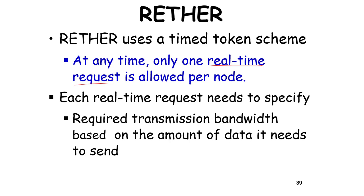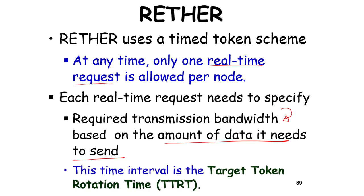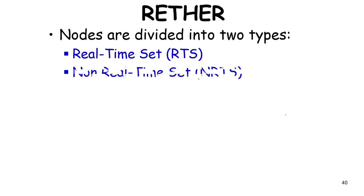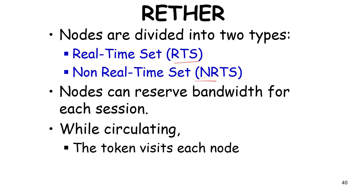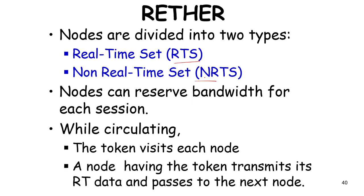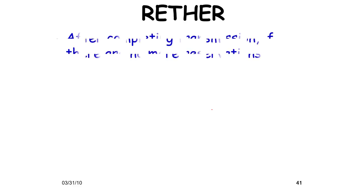An initiator A sending the switch message will acknowledge another initiator B only if B's node ID is smaller than A's. If an acknowledgement gets lost, the initiator retries for a fixed number of times. R-Ether uses a timed token scheme where at any time only one node can transmit, and each node is allowed only one real-time request — it cannot hog the network with continuous real-time requests.